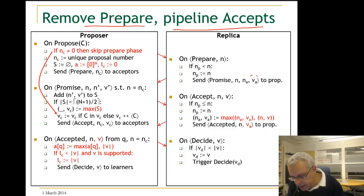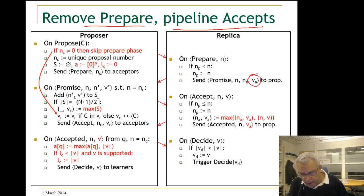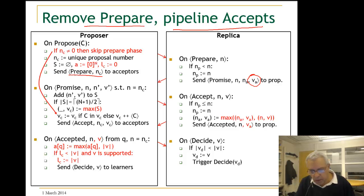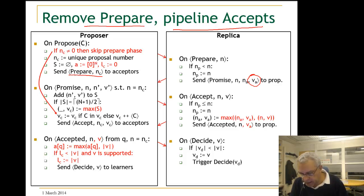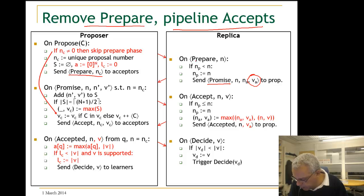We are sending a sequence VA, which is the sequence at the acceptor or replica. To avoid this, a proposer needs to include the length of its decided sequence in the prepare message. The promise message then needs to send back to the proposer only the difference between what the acceptor knows and the decided sequence at the proposer — so we send only the delta between these two.